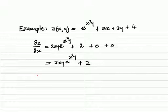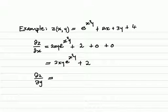So then the other partial derivative, delta z over delta y: we apply the same rules for the exponential function and for the rest of the terms. In this case, x squared is a constant and y is the variable, so x squared is the coefficient of the variable y. Delta z over delta y gives us x squared as the coefficient, multiplied by e to the power of x squared y plus 2.